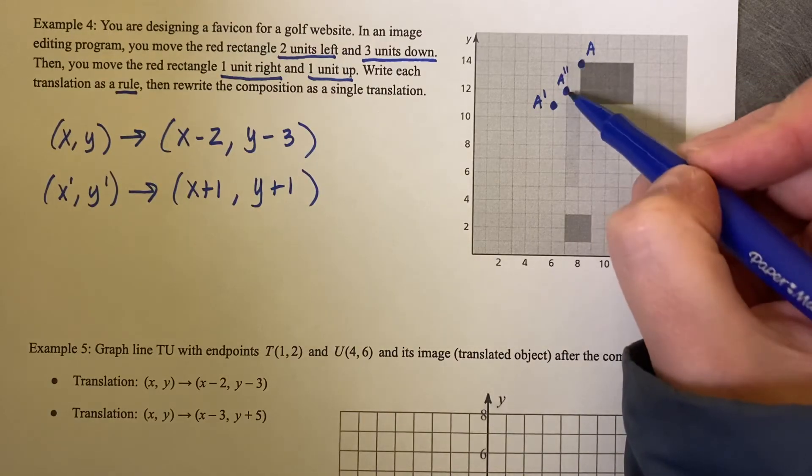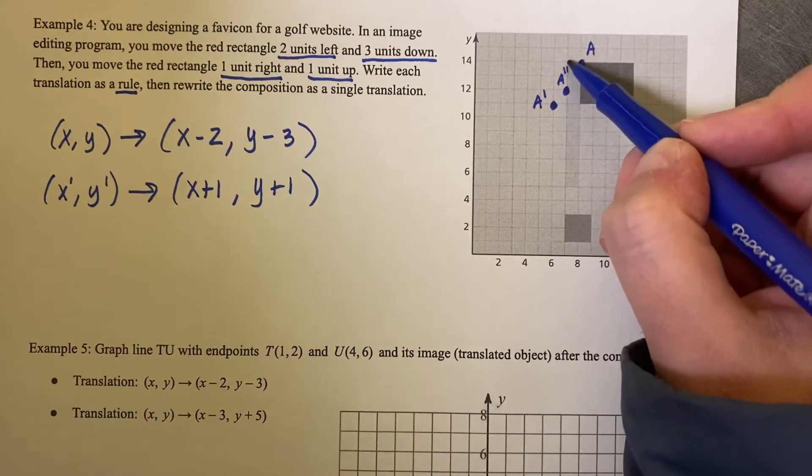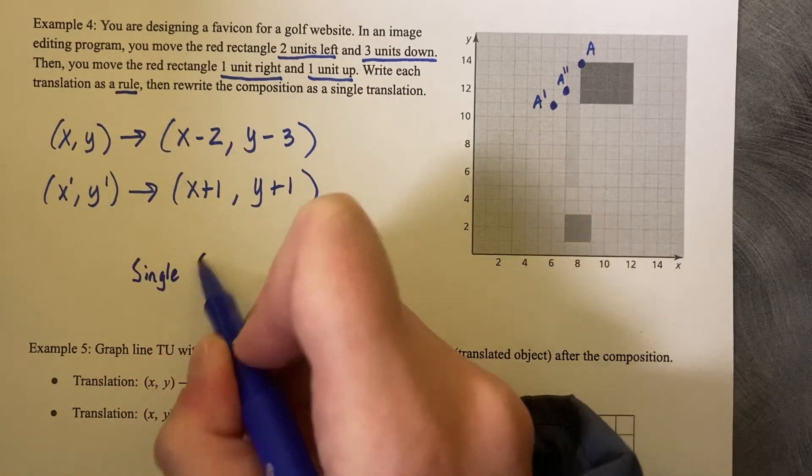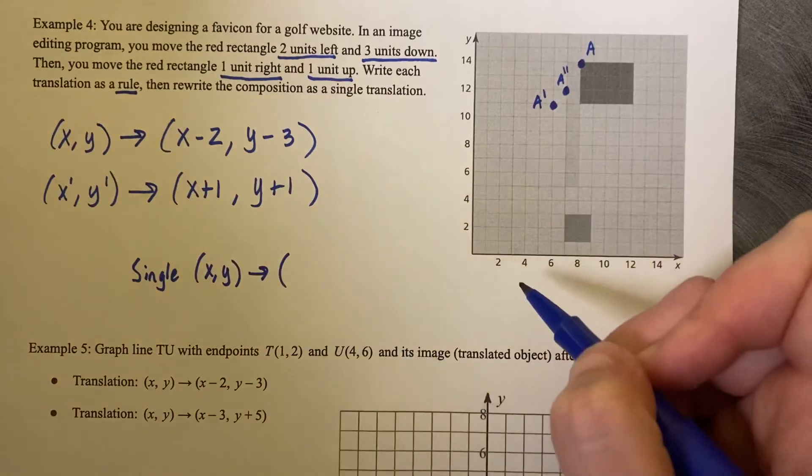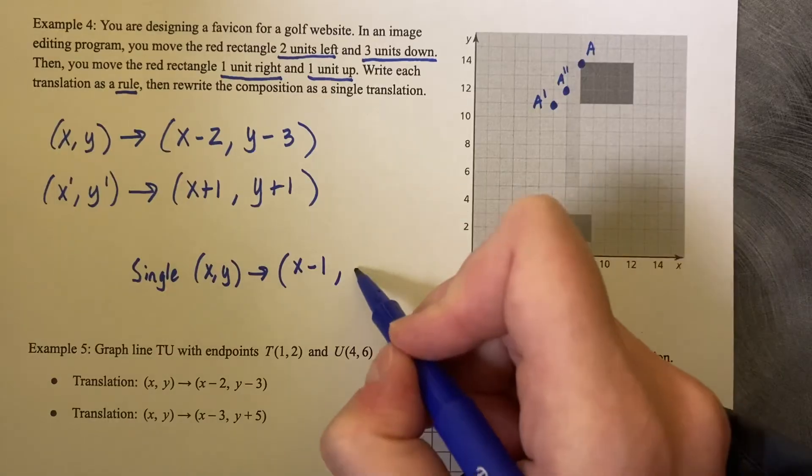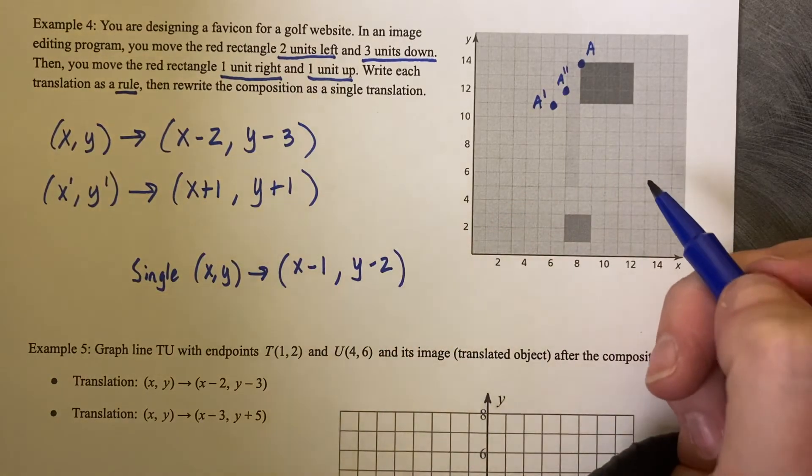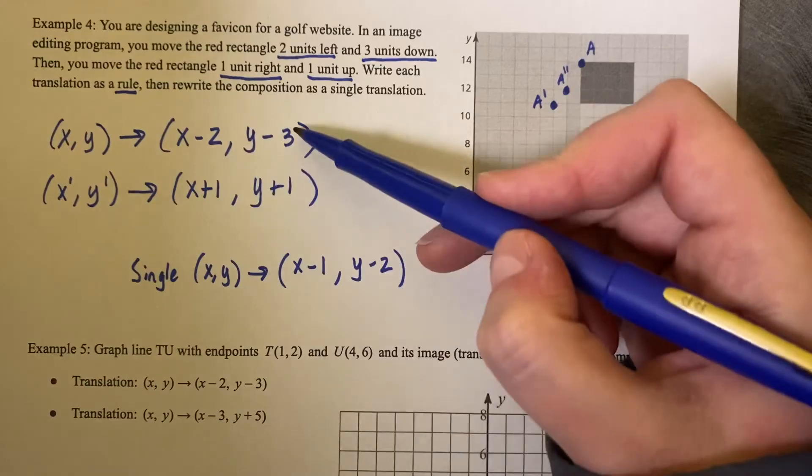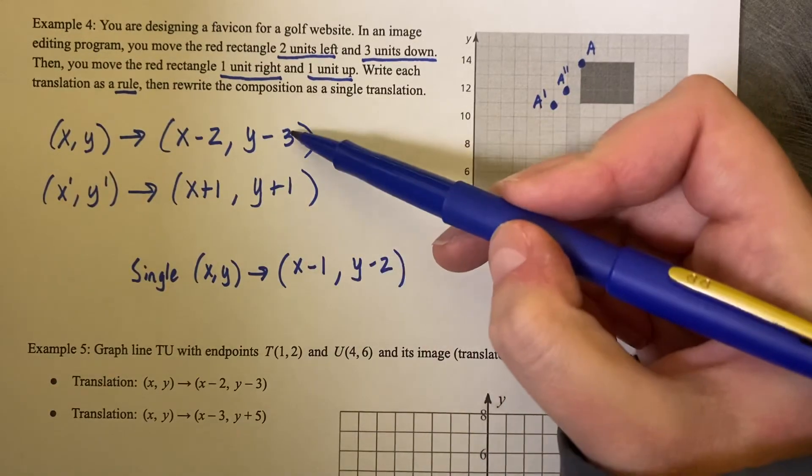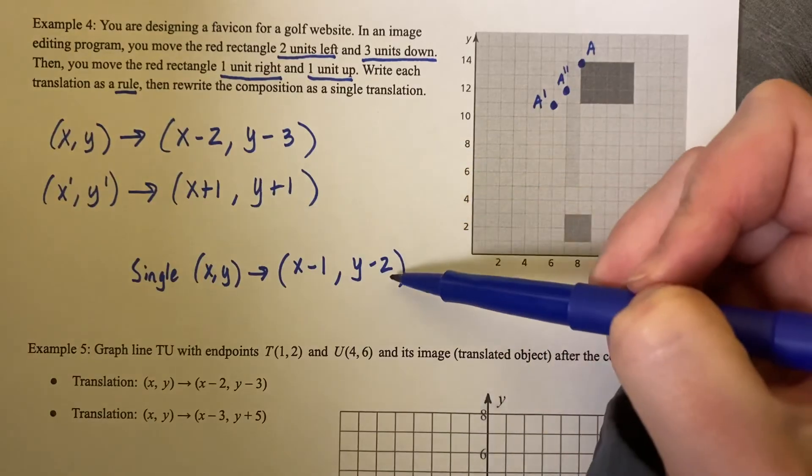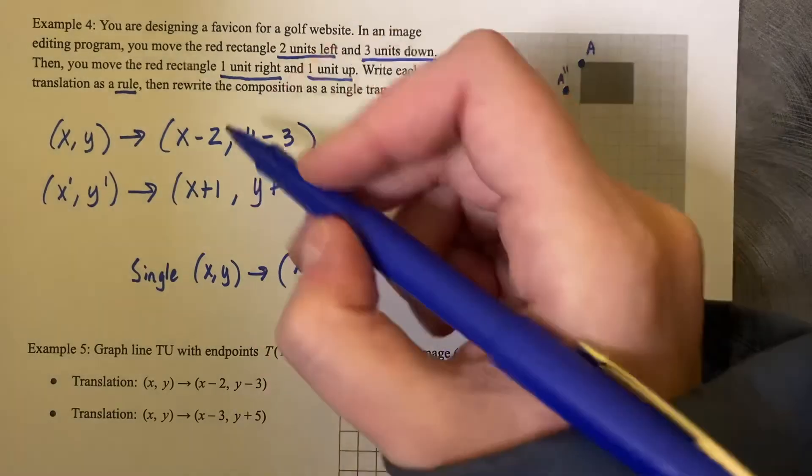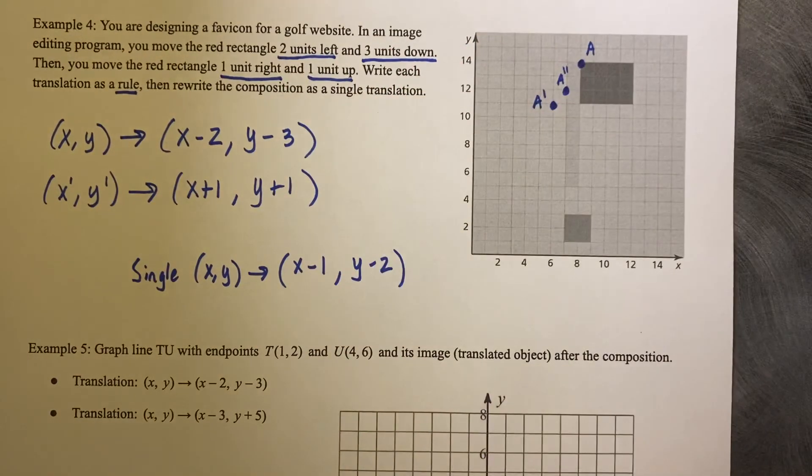So how could we get from A to A double prime? I could go left one and down two. So the single would be (X, Y) and we would go minus one and down two. You can see that in the math here that if you combo these two transformations, negative two plus one is negative one and negative three plus one is negative two. So you can do it using the math and not using the grid if you combine the mathematical values of each translation.